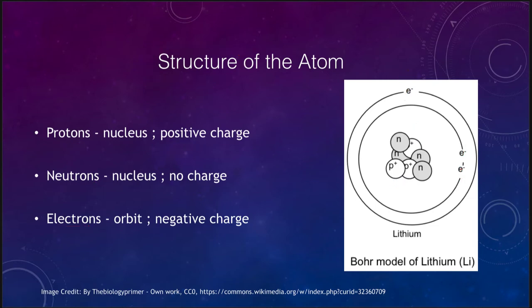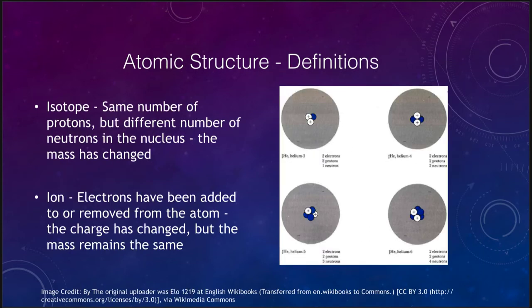Let's look at a few definitions that we need for atomic structure. We'll start with the term isotope, which are two atoms that have the same number of protons but different numbers of neutrons in the nucleus. Some examples of this would be helium-3, helium-4, helium-5, and helium-6.